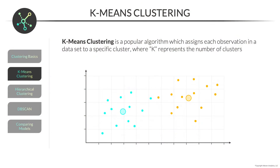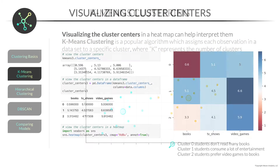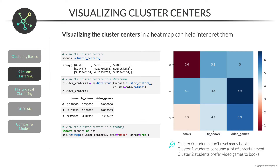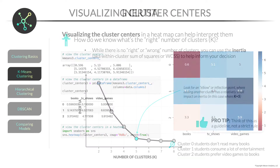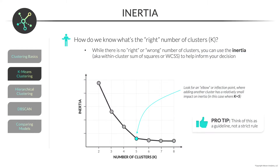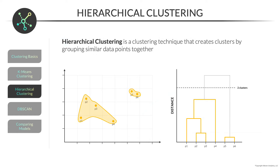From there, we'll fit, tune, and interpret three popular clustering models using scikit-learn. We'll start with k-means clustering, learn to interpret the output's cluster centers, and use inertia plots to select the right number of clusters.